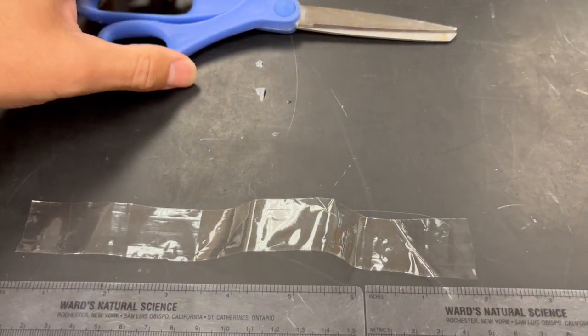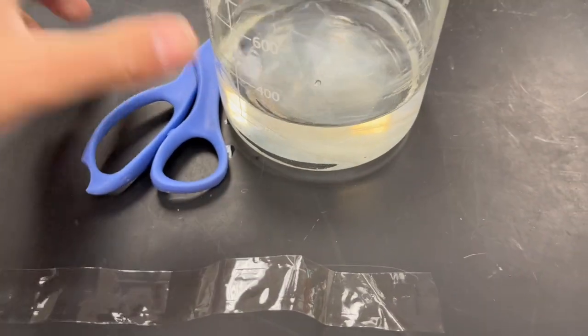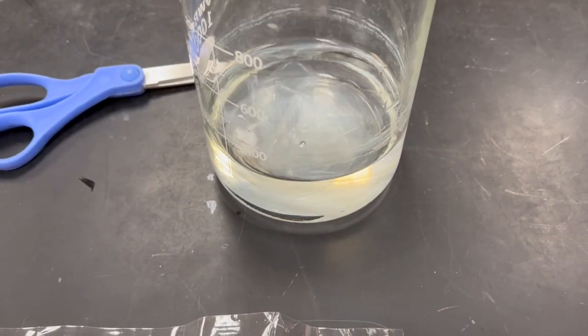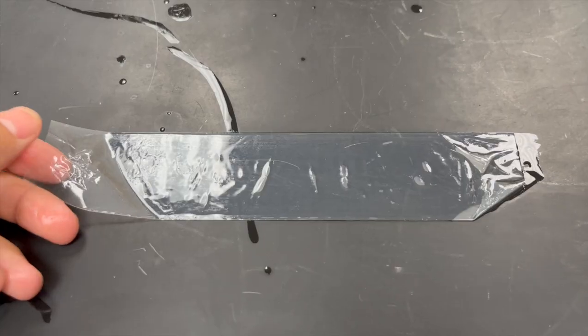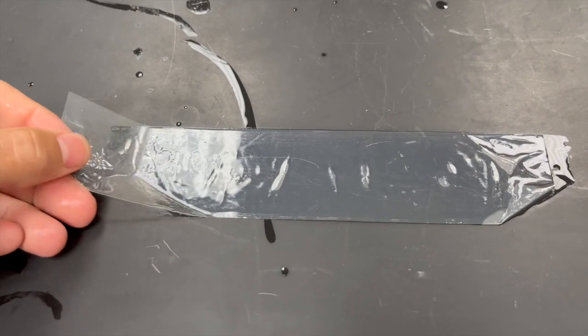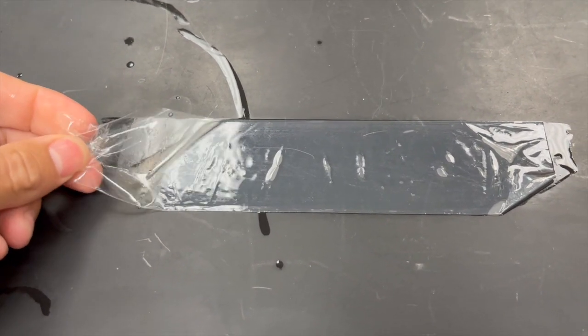After you do the 8 inch strips, you're going to place them in water. Let them soak for 1 to 3 minutes. Once you wet your dialysis tube, you're going to use your thumb and index finger to pry it to get it open on each side.